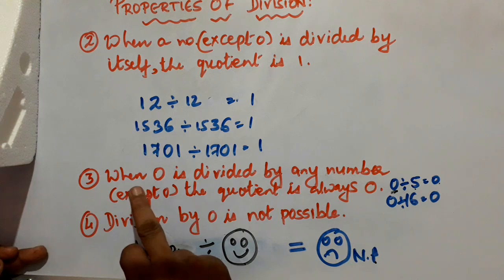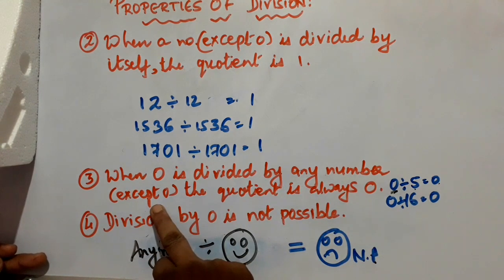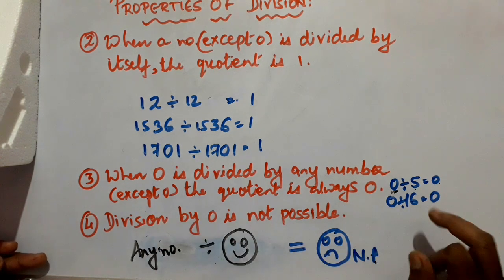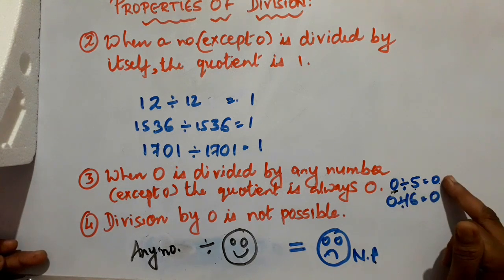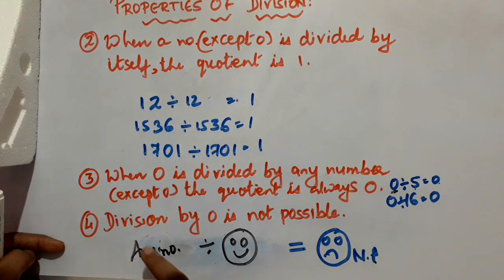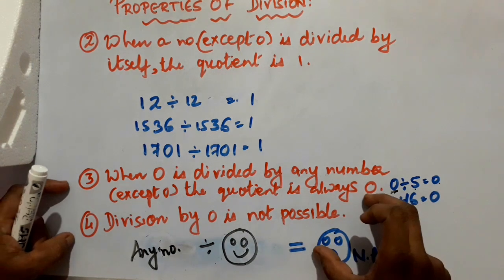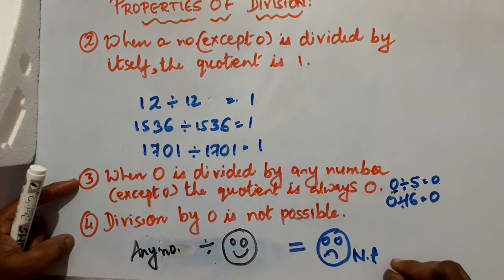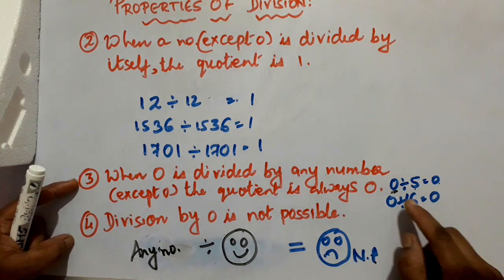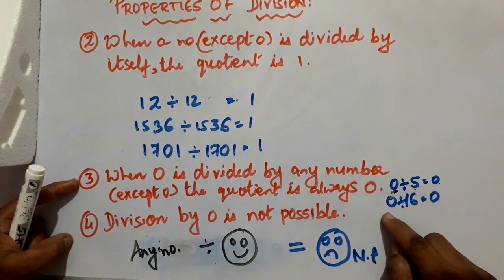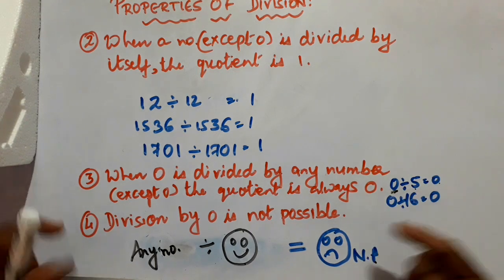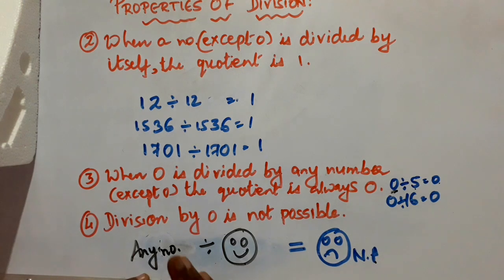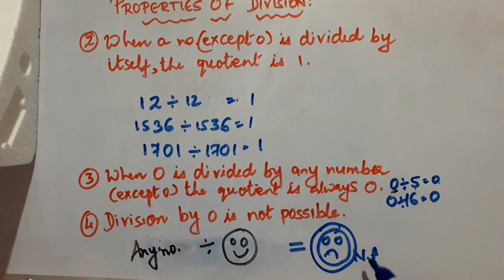When 0 is divided by any number except 0, the answer is always 0. And division by 0 is not possible. To remember these two properties: 0 always wants to be in the first position. If 0 is in the first position it is happy — so 0 divided by 16 is 0, and 0 divided by 10 is 0. But when 0 is in the second position, it is not possible.